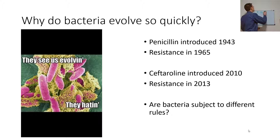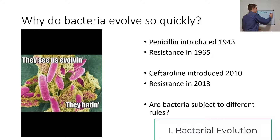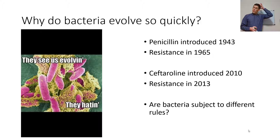We see bacteria evolve very quickly — not as quickly as HIV, but still disturbing. Penicillin was introduced in 1943, and resistance was first documented in 1965. Ceftaroline was introduced in 2010, and resistance was seen as early as 2013. So we wonder: are bacteria playing by different rules, evolving so quickly compared to other organisms?